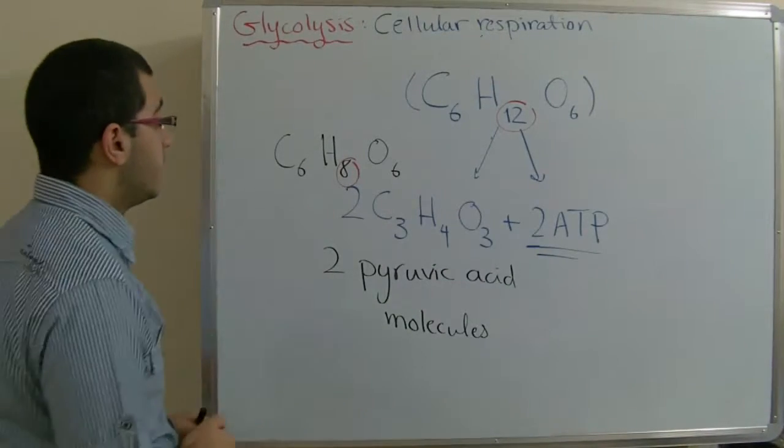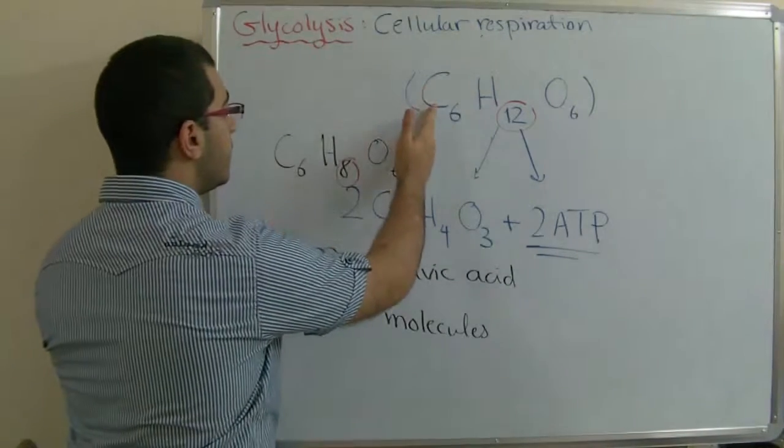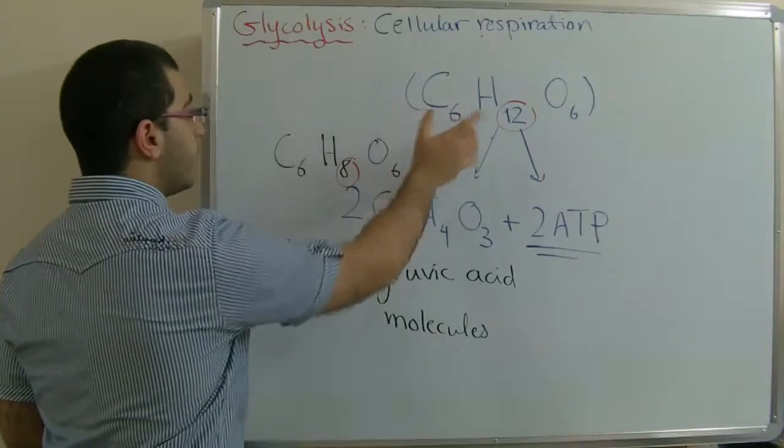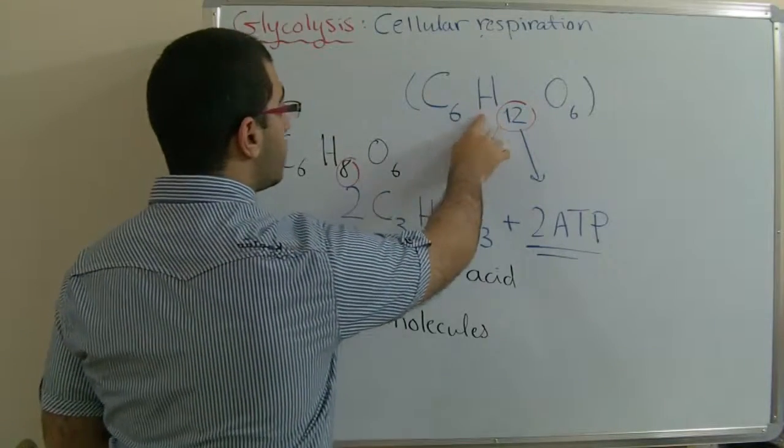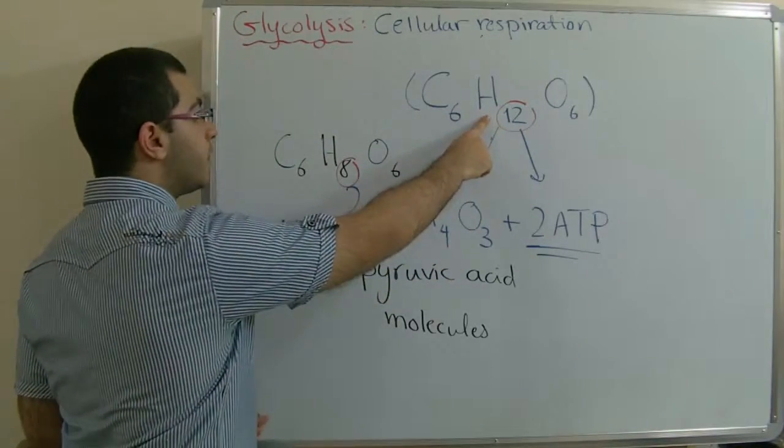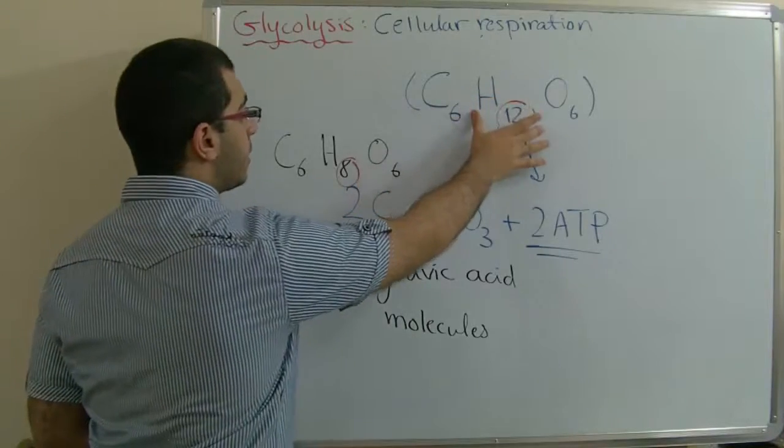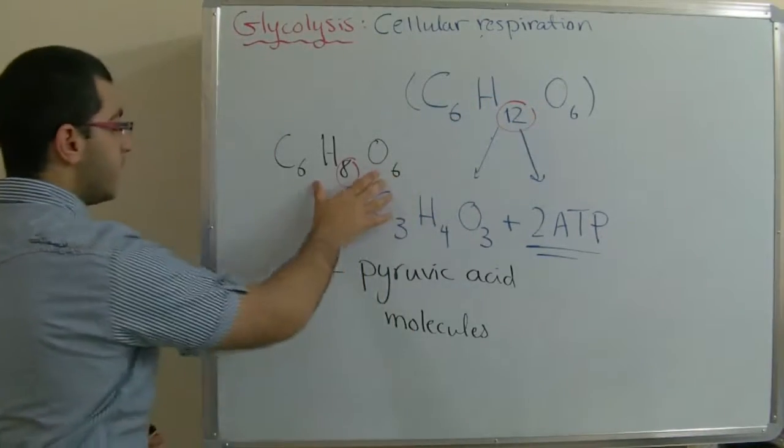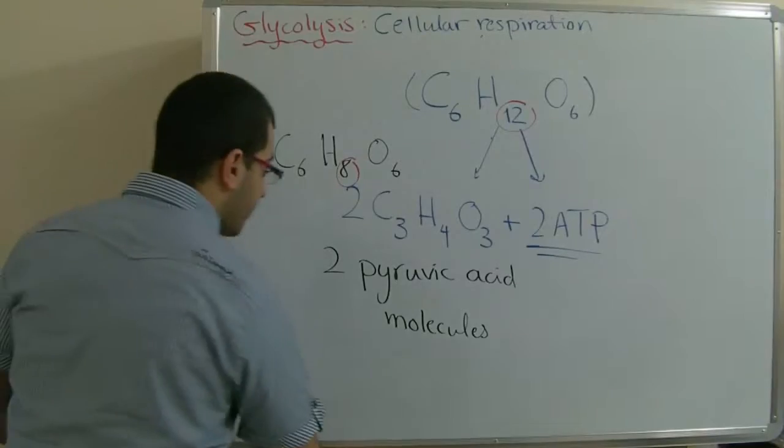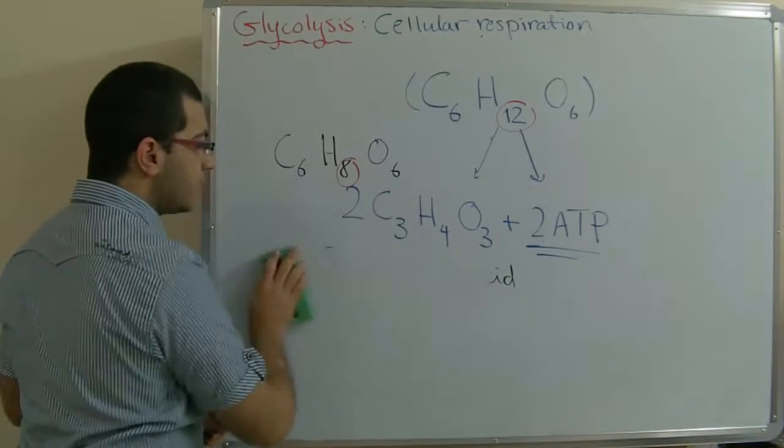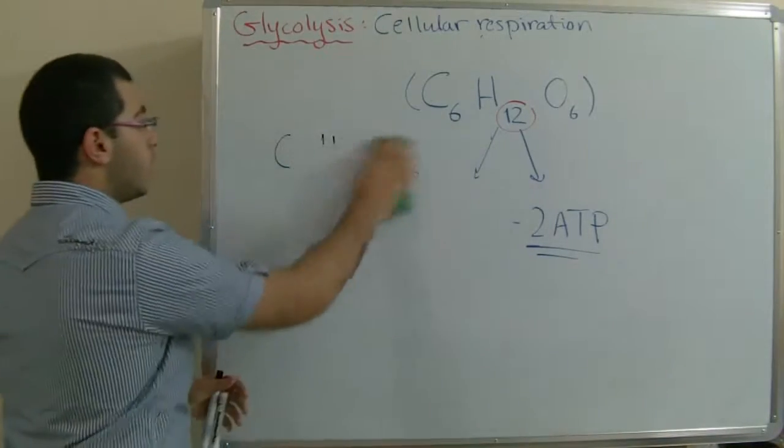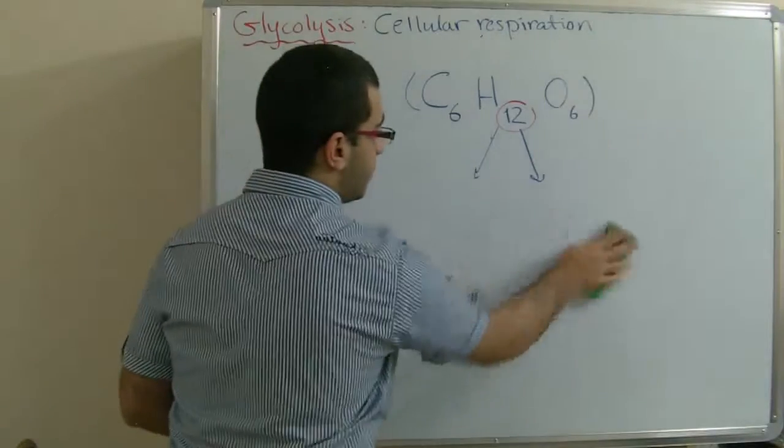We can conclude from that that there are 4 hydrogen atoms which are lost from the glucose molecule during this oxidation. We will now know how these molecules are lost or where did they go.